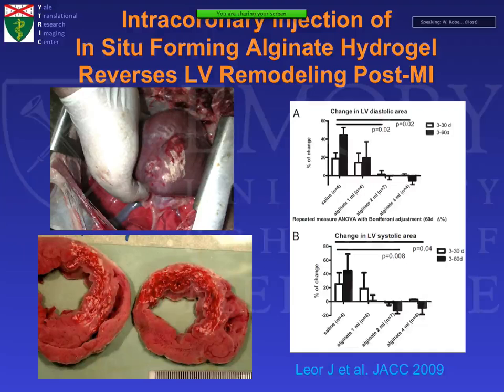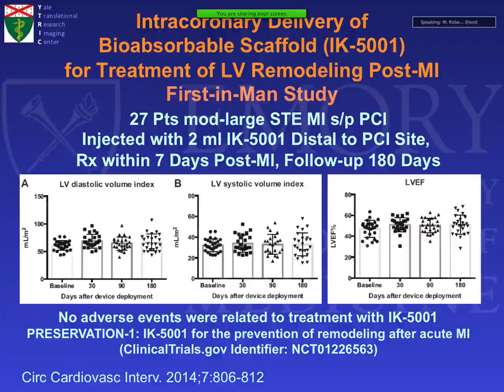In a pig model, alginate hydrogel given early post-myocardial infarction stiffens the wall and prevents adverse LV remodeling in the early post-infarct period, then breaks up and is gone within six to eight weeks. Less dilatation was shown in pigs receiving intracoronary calcium-sensitive polymer — injected down the coronary post-MI, it leaks into tissue in the presence of calcium, complexing and stiffening the wall. This went to an early clinical trial in 27 patients with ST elevation MI following primary angioplasty, showing no clear benefit but also no adverse effects.